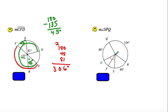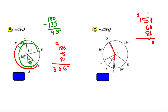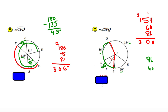The measure of angle SPQ: we know this is 60 and this is 154. Adding 154 plus 60 plus 86 gives me 300. So all of that is 300. SPQ: 86 plus 60 is 146, which is that remaining piece.